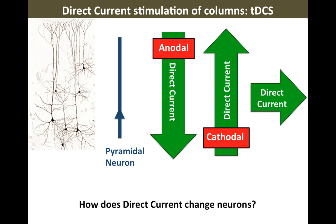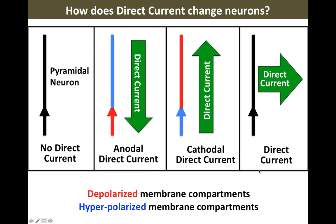The question is how current flowing in these different directions — anodal, cathodal, or sideways — affects the cell. We were building on work going back decades with very specific hypotheses. Current flowing down into the head, the anodal direction, is expected to produce a polarization profile where the soma would be depolarized and the dendrite would be hyperpolarized. Current flowing in the opposite direction would produce the opposite: the soma hyperpolarized and the dendrite depolarized. In either case, I want to emphasize, you always have both depolarization and hyperpolarization. There is no form of low-intensity electrical stimulation that produces just depolarization or just hyperpolarization — you always get this seesaw kind of pattern.